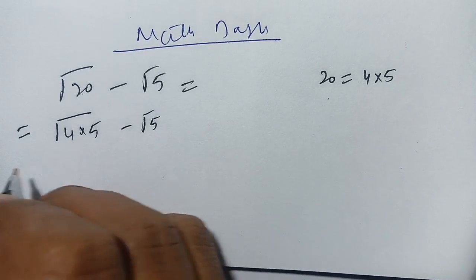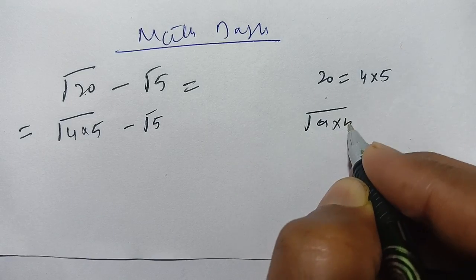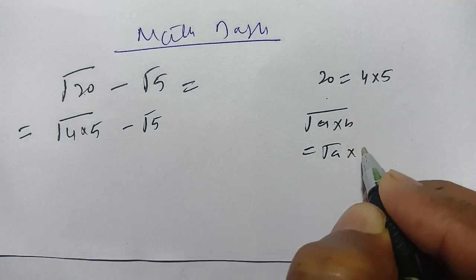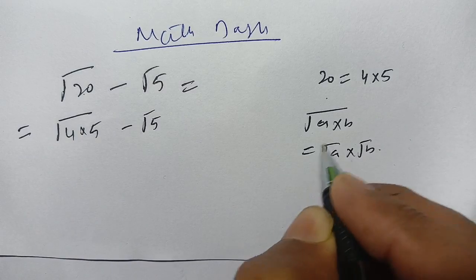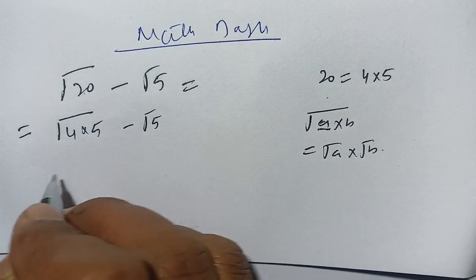And we know that square root of a times b is equal to square root of a times square root of b. Same case here. Here a is 4 and b is 5. We get square root of 4 times square root of 5 minus square root of 5.